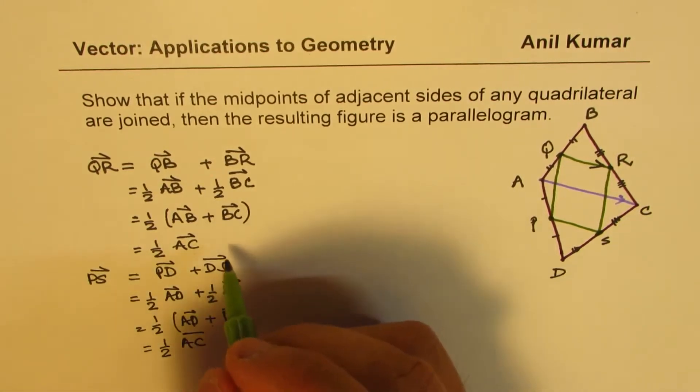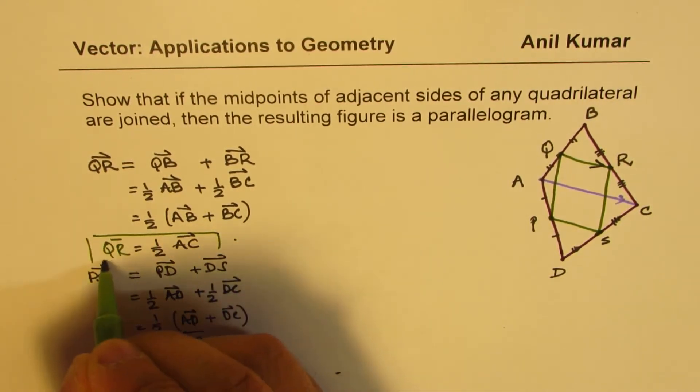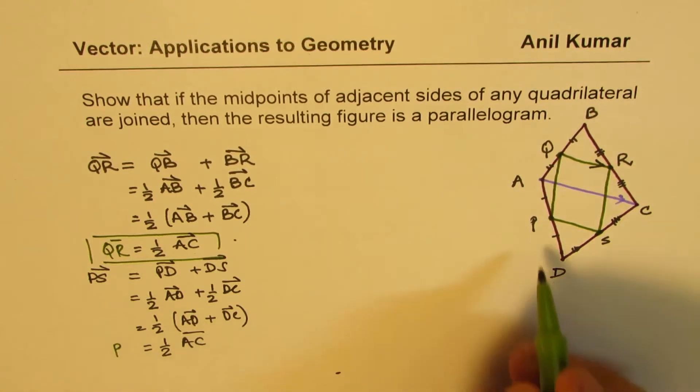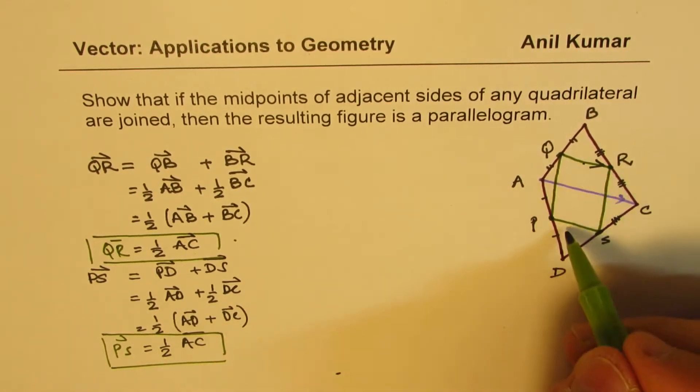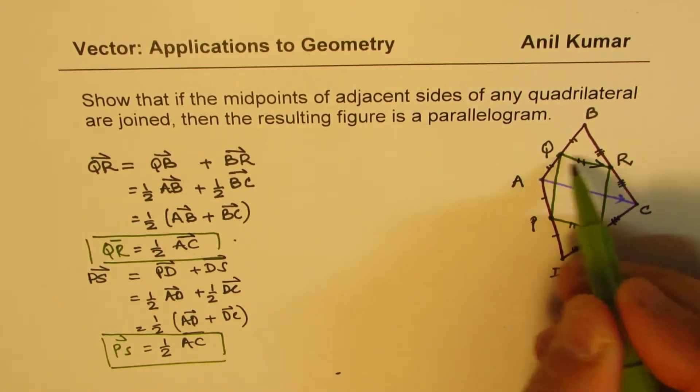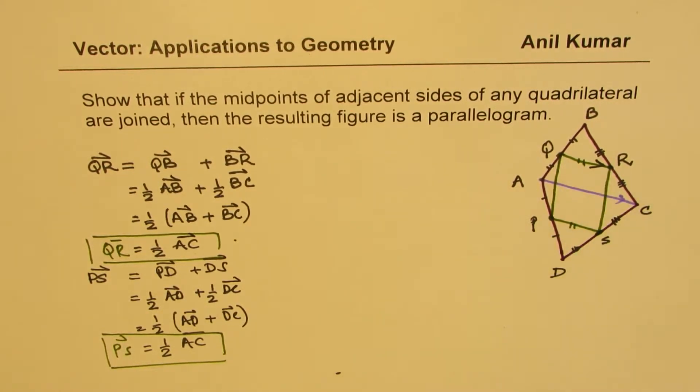So comparing equation one, which is Q, R is equal to half of A, C. And now we got this P, S, the opposite end is half of A, C. So both are the same. So that shows that these are equal and they are parallel. So the opposite sides are parallel. Now you could use the same strategy.